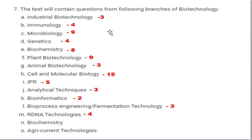As mentioned earlier, you can't find a previous question paper for the DBT Biotech Industrial Training Program, but you can find previous question papers for the Biotechnology Eligibility Test. Both the Biotechnology Eligibility Test and the BITP program are conducted by the Department of Biotechnology, and the question paper setting theme will be the same. So if you prepare using previous question papers for the Biotechnology Eligibility Test, you can definitely clear the Biotech Industrial Training Program.